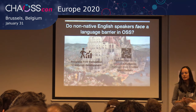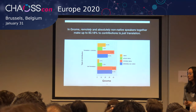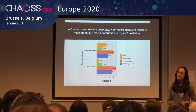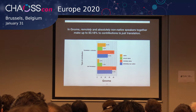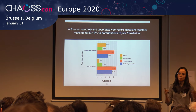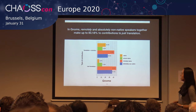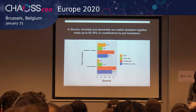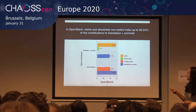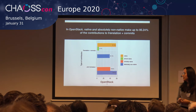We split people by different types of contributions — those that did translation and then changed the source code, and those that just did translation. For GNOME, we found that most contributors just do translation, meaning the project somehow does not retain those contributors to do more technical change. We also found that most people who do just translation are either remotely native or absolutely non-native. Most people who are native speakers do translation and code changes. For OpenStack, we found that native and absolutely non-native English speakers do translation and code changes, while remotely native speakers just do translation.